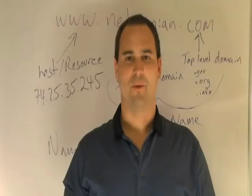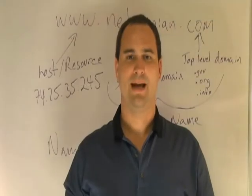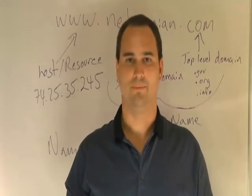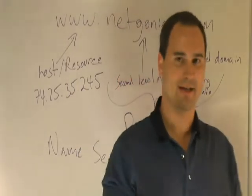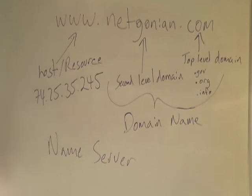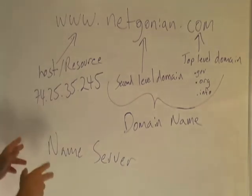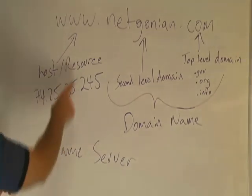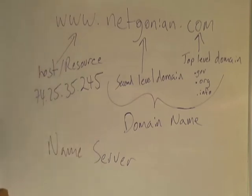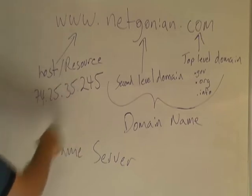Now let's move on to domain names. Domain names are names over which somebody has control — they have control because they own it and they purchased it. Recall that a website, which is a resource on the Internet, resides at an IP address. We could get to that website by typing in the IP address, but that's not very practical.